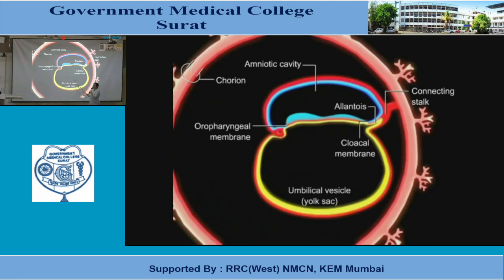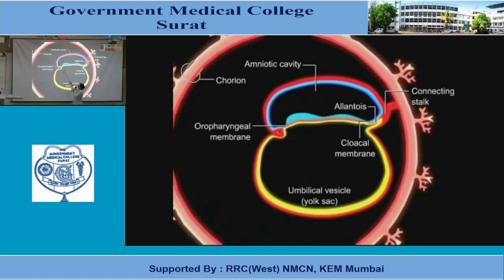This diagram I have drawn many times in the lectures of embryology. This is the amniotic cavity and umbilical vesicle. This is the head end of the embryo and this is the tail end of the embryo. How do we decide the head and tail end? That is determined by the prechordal plate and primitive streak. So the cephalic end has the oropharyngeal membrane — the prechordal plate — where there is direct contact of ectoderm and endoderm with no mesoderm in between.